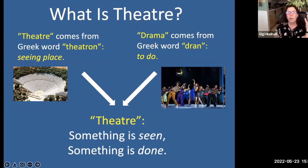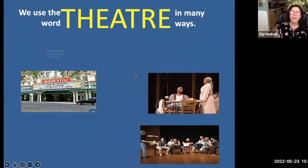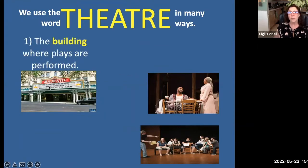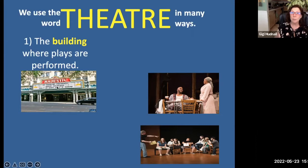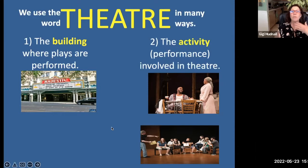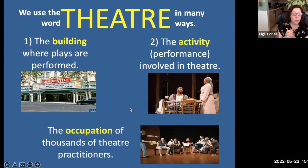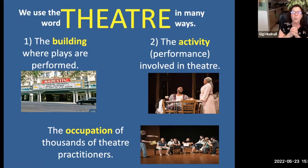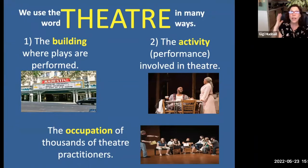We use the word theater in many ways. First, it's the building where a play is performed — like the Majestic Theater, where you might go see Hamilton. Theater is also the activity: if I am performing, I am doing theater. And theater is also the occupation of thousands of people involved in it. So this book covers all three things: it's the building, it's the activity, and it's the occupation.